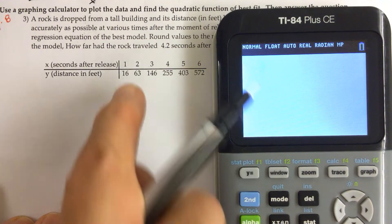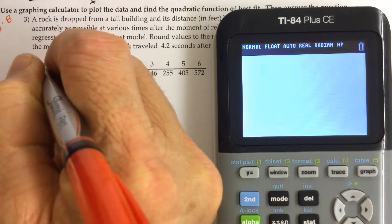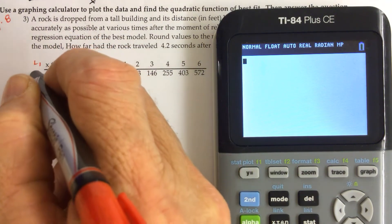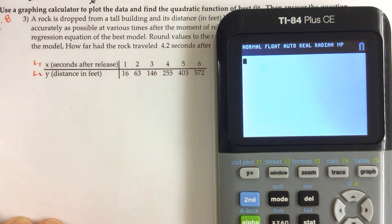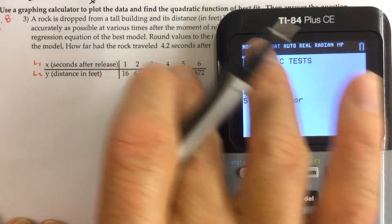To get that, we want to be typing in our data. So this is our list 1, these are our list 1 values, and this is our list 2, these are our list 2 values. And to get to those lists, we want to push the stat button, because we have statistics here.